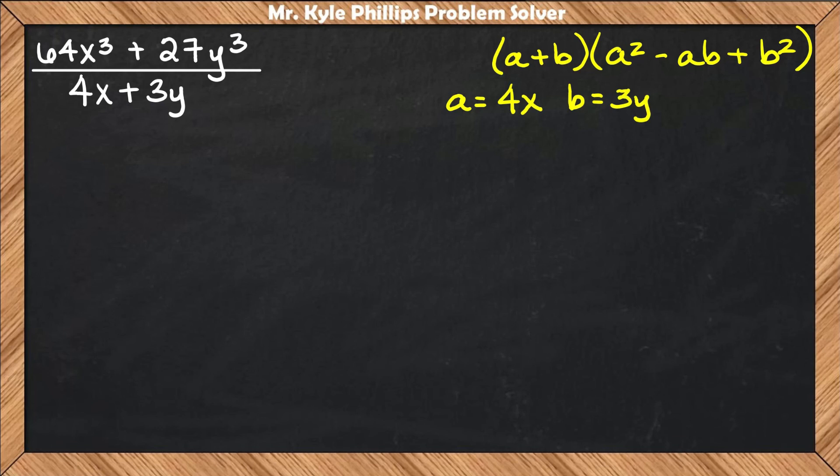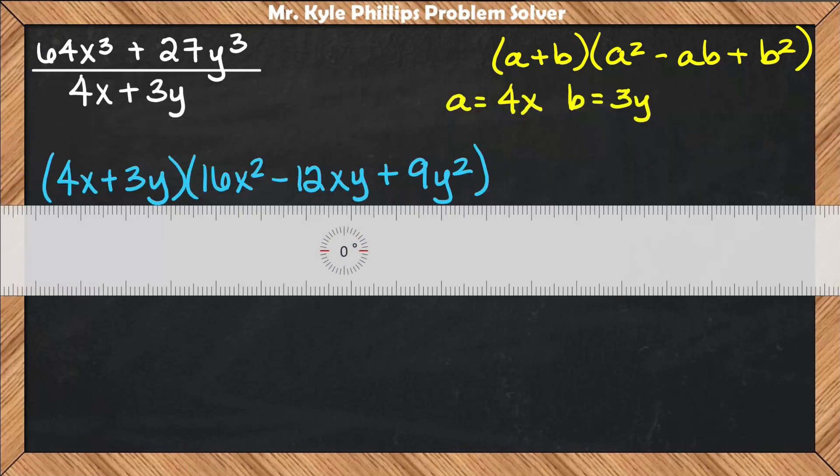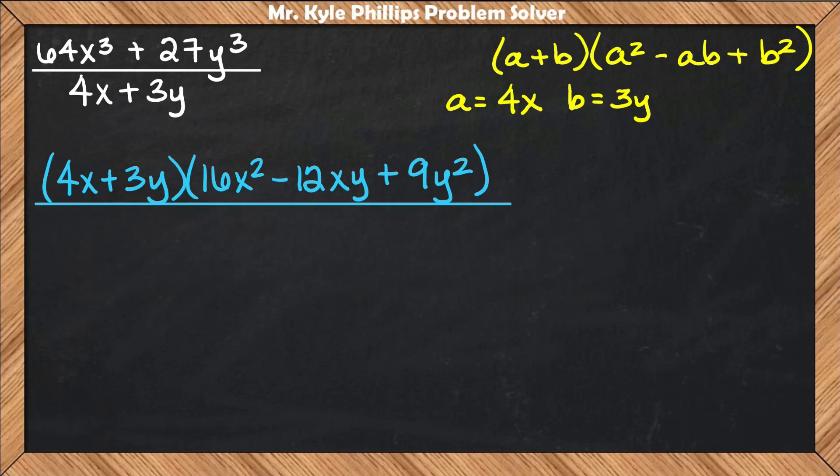To factor here, I'll say a + b, so that's 4x + 3y. This will be multiplied by a², so (4x)² is 16x² minus a times b. So minus 4x times 3y is 12xy plus b². So (3y)² is 9y².